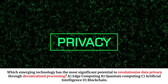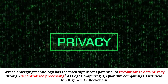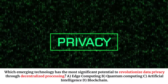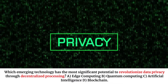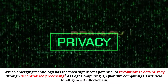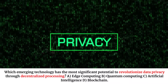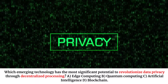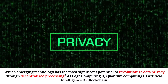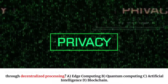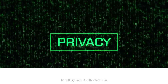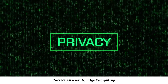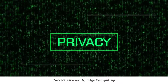Which emerging technology has the most significant potential to revolutionize data privacy through decentralized processing? A. Edge computing. B. Quantum computing. C. Artificial intelligence. D. Blockchain. Correct answer: A. Edge computing.